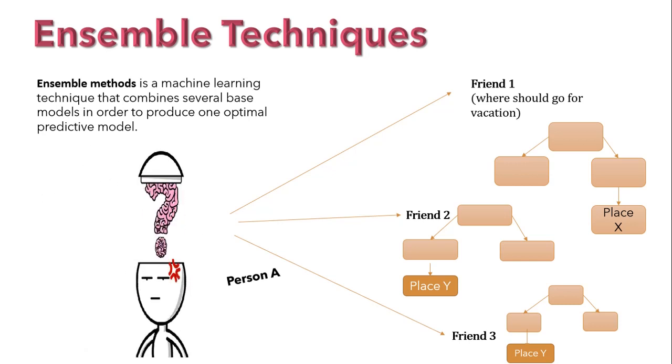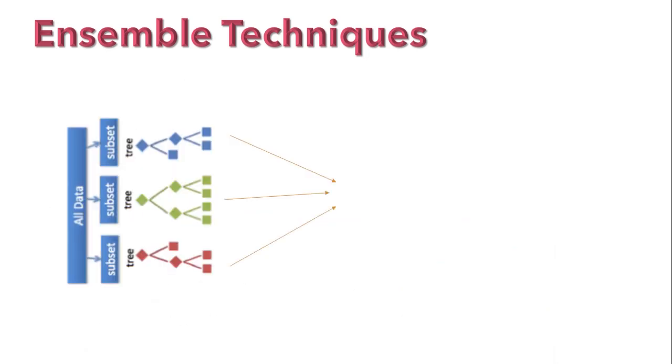So this process is nothing but the ensemble technique where we are having different decision trees with us operated as ensemble and we get this by the method called bootstrapping. Each individual tree spits out a class prediction and the class with most votes would be considered as a final target class and this is known as bagging.